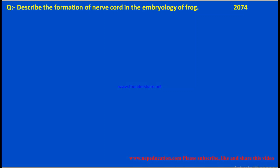Hello everyone, welcome to your channel NEP Education. I have a short question taken from class 10, 11, 12, which was already asked in 2074. But actually, it is a very important question — the formation of nerve cord in the embryology of frog. This question goes by the name of neurulation.